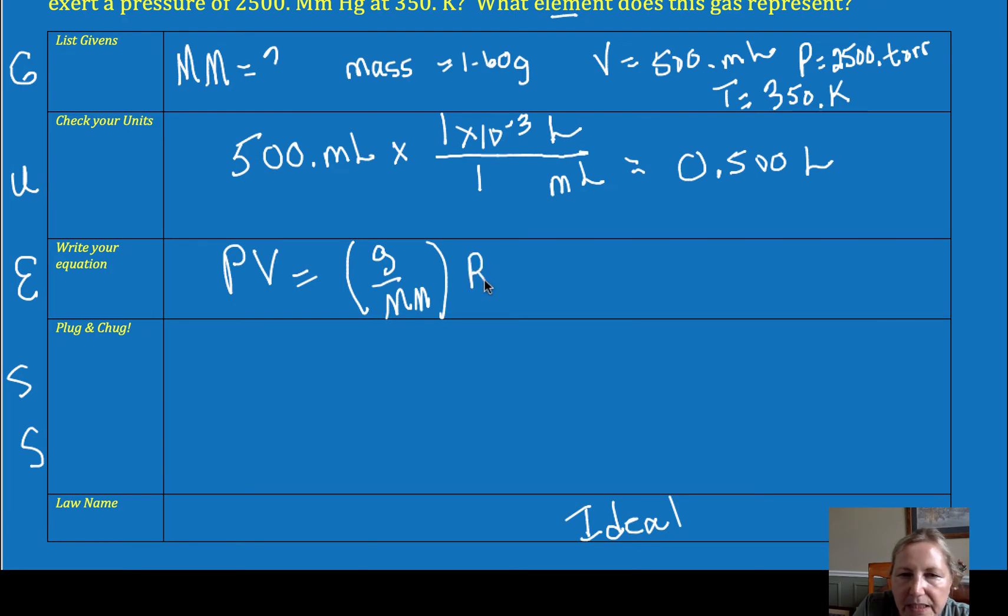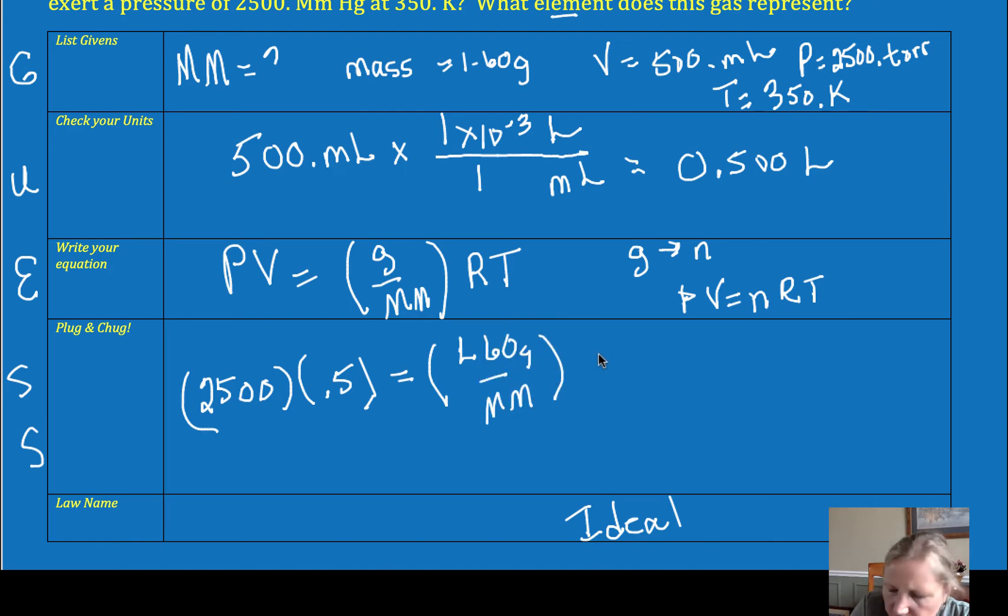You could do this in two steps. You could convert mass to moles, and then use PV equals NRT if you prefer. I'm going to use this combined equation. So for pressure, I'm going to put in 2,500. For my volume, it's 0.5 equals my 1.6 grams over my molar mass. Make sure you do this math. Don't just trust my value here. I say that in particular because when the unknown is in the denominator, a lot of you will mess up your algebra a little bit. So double check our algebra there. Since my pressure is in Tor, the R value I'm going to grab is 62.4, and then my pressure is 350.